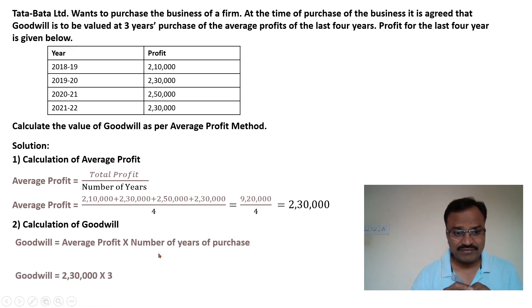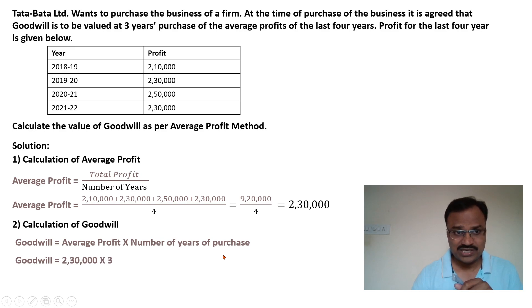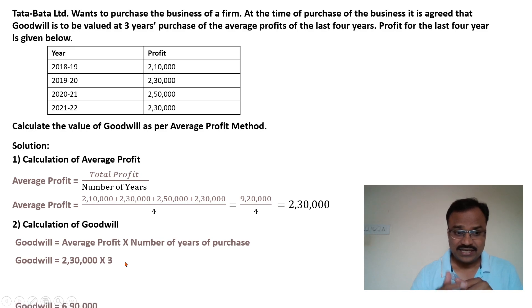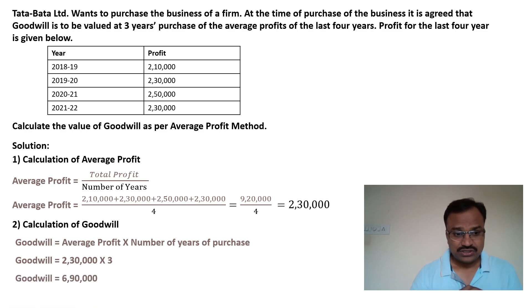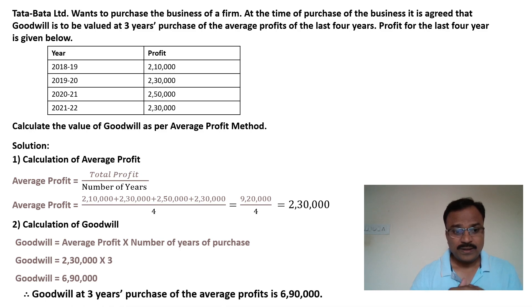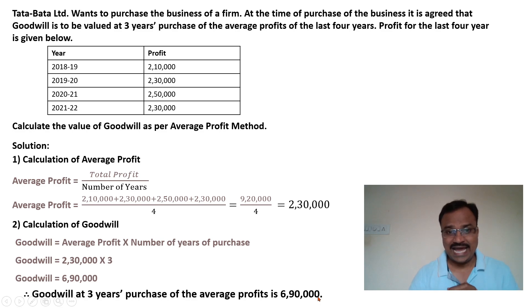Here average profit is 2,30,000 and the number of years of purchase is three as given in the question. So 2,30,000 multiplied by three equals 6,90,000. Therefore, goodwill at three years purchase of the average profit is Rs. 6,90,000.